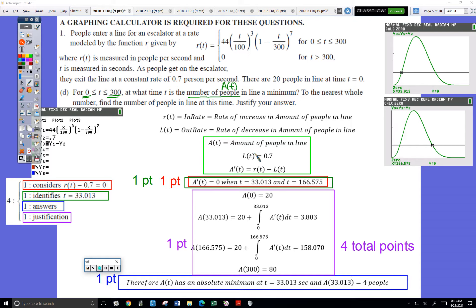For times 0 to 300, at what time is the number of people a minimum? The number of people, that's A of T. So what time is A of T a minimum?